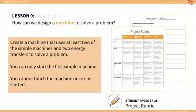Tell students, Now you will get a chance to design a machine just like Laudner Phillips. Your mission is to create a machine that uses at least two of the simple machines and two energy transfers to solve a problem. You can only start the first simple machine. After that, you cannot touch the machine once it has been started.